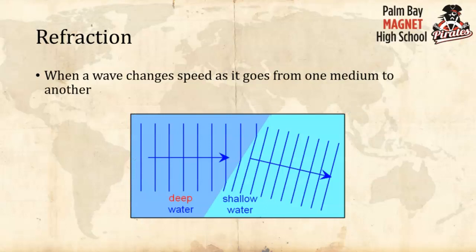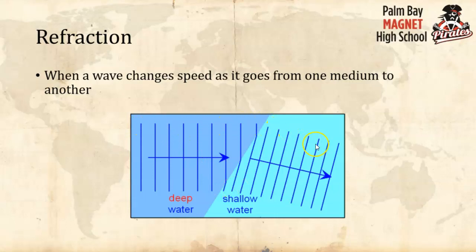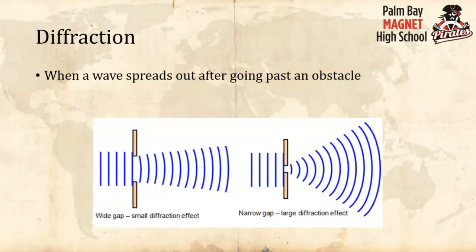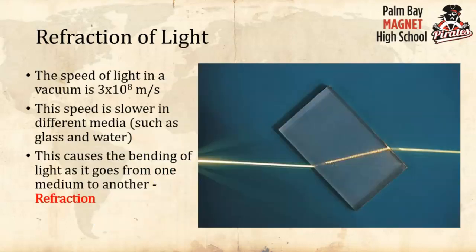Refraction is the one we're using today. Refraction is where a wave changes speed as it goes from one medium to another. For example, water waves going from deep to shallow water hit at an angle — the part that hits shallow water first slows down first, causing the whole wave to bend. Diffraction is where a wave spreads out through a gap, but that doesn't come up today.